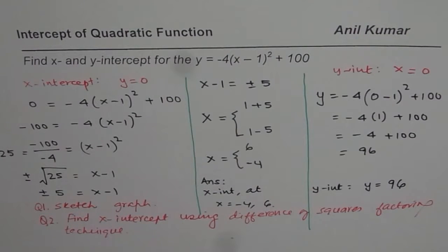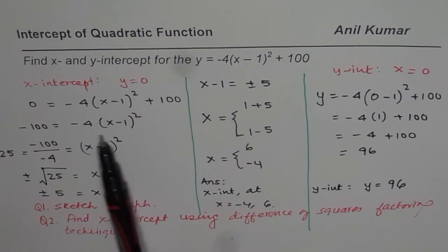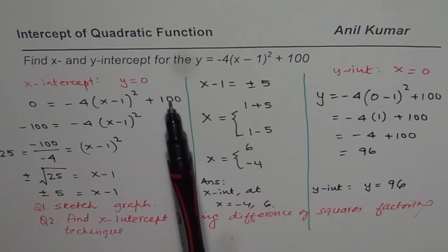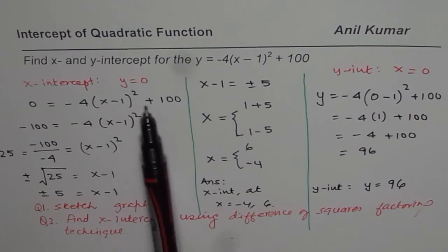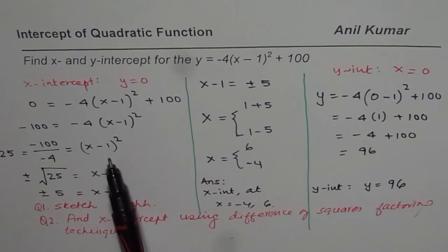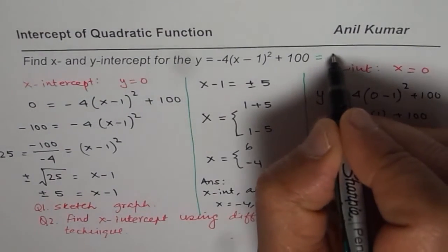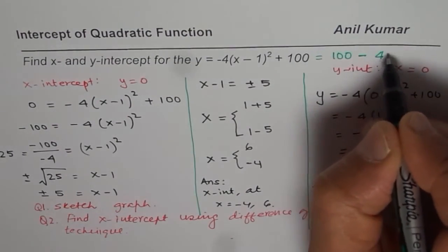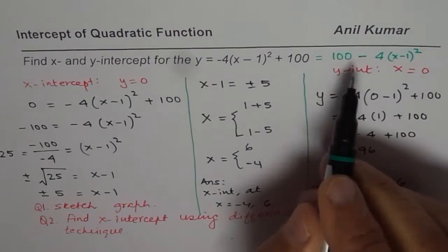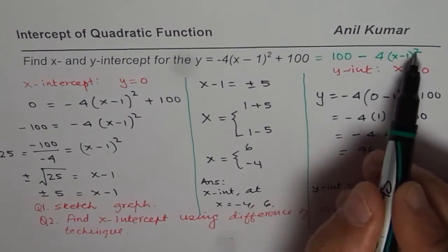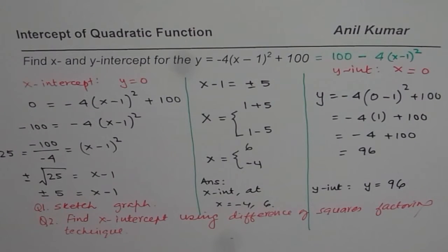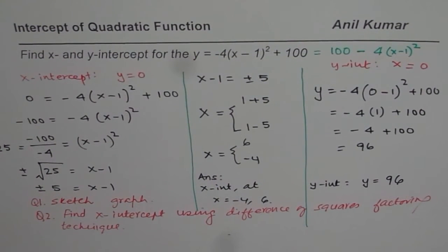You can also find the x-intercept using the difference of squares factoring technique. If you look at this example, I can write this as 0 equals 100 minus 4 times (x minus 1) squared. That is a perfect difference of squares — 10 squared is 100, and 2 times (x minus 1) whole square is the other term. So that would help you find the x-intercepts in an alternate way.